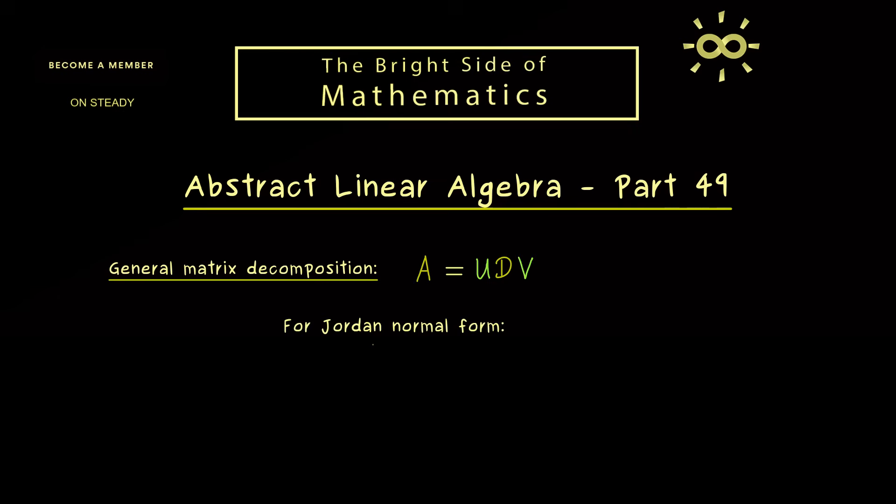In fact in the case that the diagonalization of A works, we have a diagonal matrix and U and V are inverses of each other. And moreover the generalization of that would be the so called Jordan normal form decomposition. Again, in this case U and V are completely connected, because the one matrix is the inverse of the other. And on the other hand, D is in general not a diagonal matrix, but just a Jordan normal form.